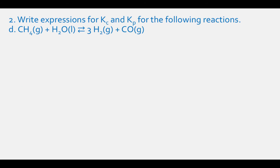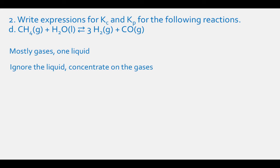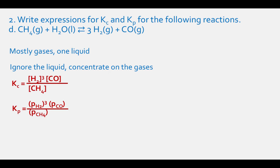For letter D, we have mostly gases but one liquid. We will ignore the liquid and concentrate on the gases. The Kc expression is the concentration of H₂ cubed times the concentration of CO divided by the concentration of CH₄. The Kp expression is the partial pressure of H₂ cubed times the partial pressure of CO divided by the partial pressure of CH₄.